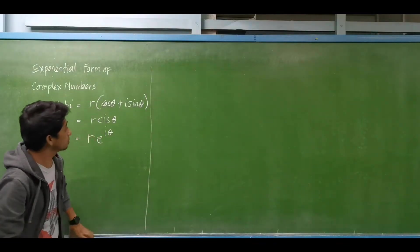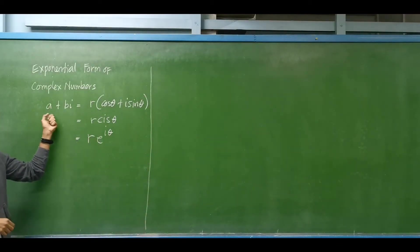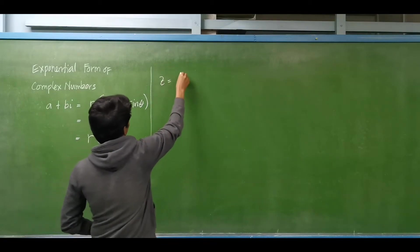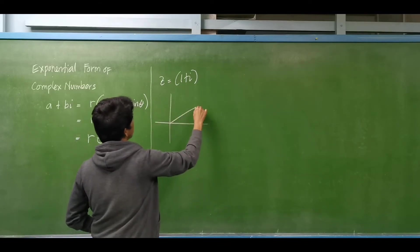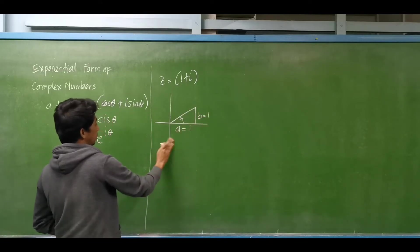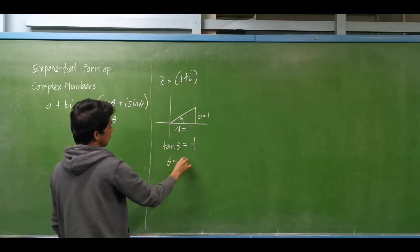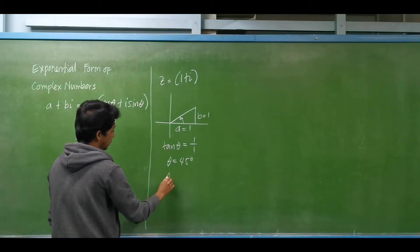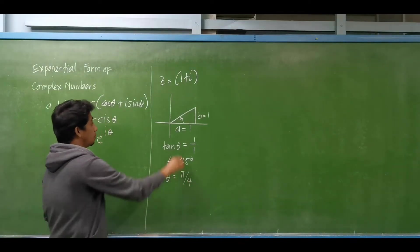How do we convert a complex number from rectangular to exponential form? We have the complex number Z equal to 1 plus i. If we plot this, it is on the first quadrant. The value of B is equal to 1 and the value of A is also equal to 1. So the tangent of theta equals 1 over 1, giving theta equal to 45 degrees, or in radians, pi over 4.